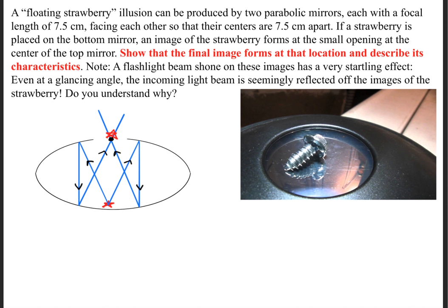So now that we have this conceptualized understanding of the physics, let's do the mathematics behind it. We have to simply apply the mirror equation twice. For the upper mirror, we'll say that 1 over p sub 1 plus 1 over q sub 1 is equal to 1 over the focal point. If we plug in the values, we were told that it's 7.5 centimeters apart. So the object is 7.5 centimeters. We don't know the image yet, but we do know that the focal point is also 7.5.